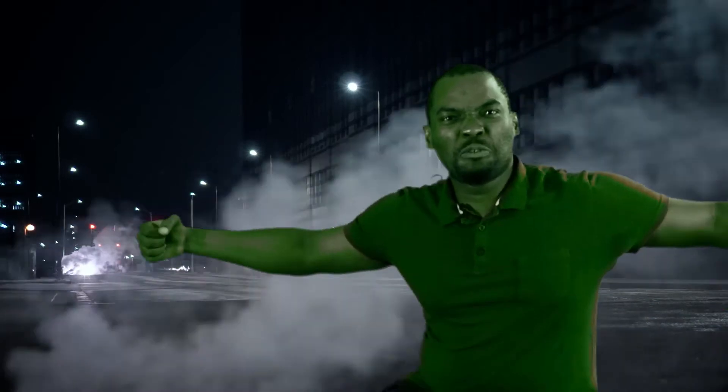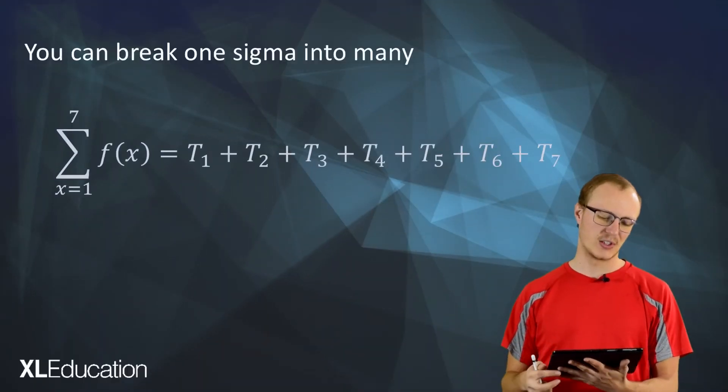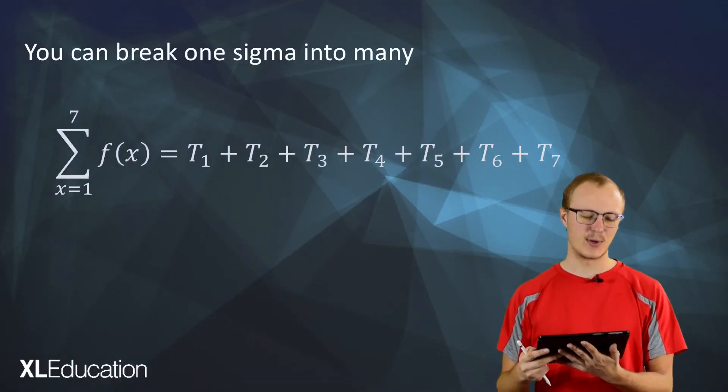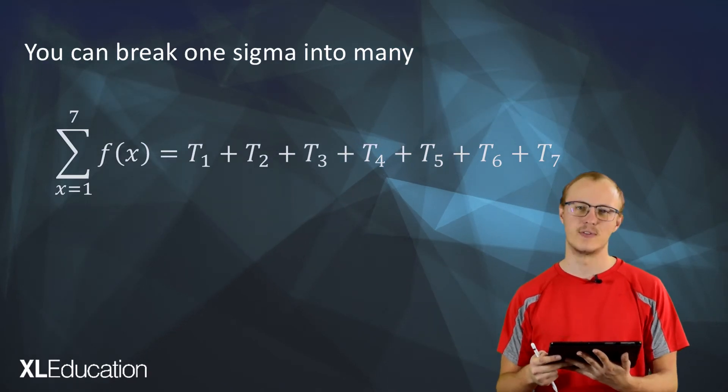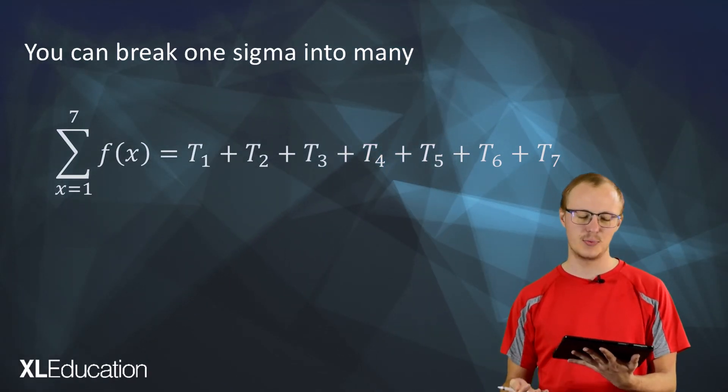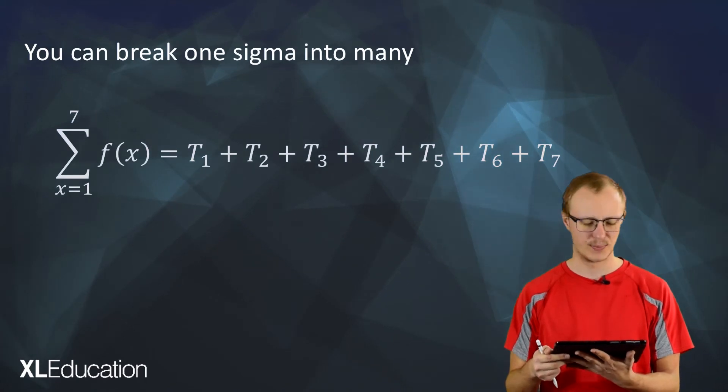Now you can break one sigma into many and you don't even need Hulk's strength to do it. Hulk smash! How does it work? So we've got the sigma from x equals 1 to 7 for f of x. f of x is just a function which means we add up term 1, term 2, all the way to term 7.